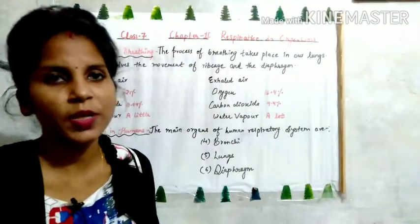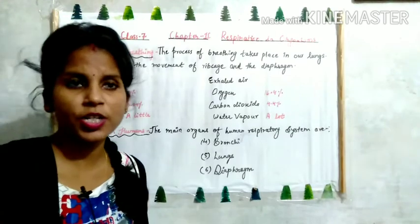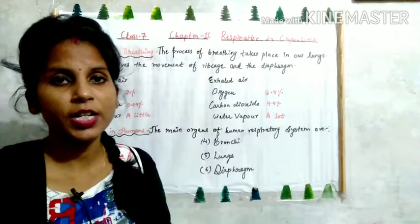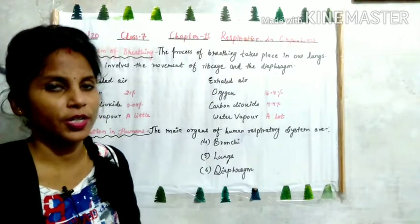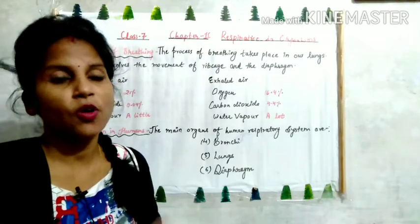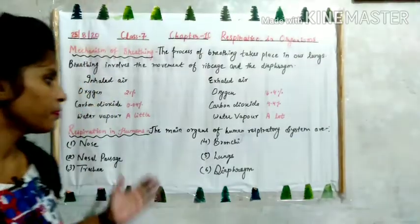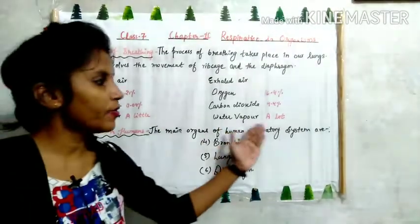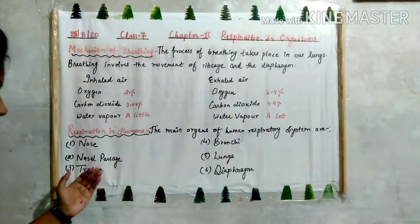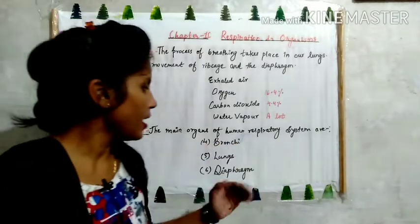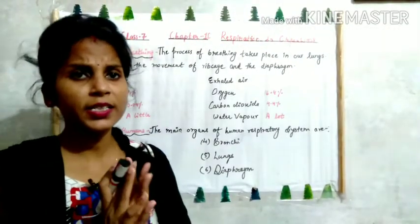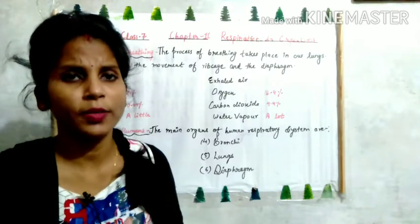Now we will study about respiration in humans. What is respiration? The process of breaking down of food to release energy is called respiration. The main organs of the human respiratory system are: nose, nasal passage, trachea, bronchi, lungs, and diaphragm. These are the six major organs involved in the process of respiration.